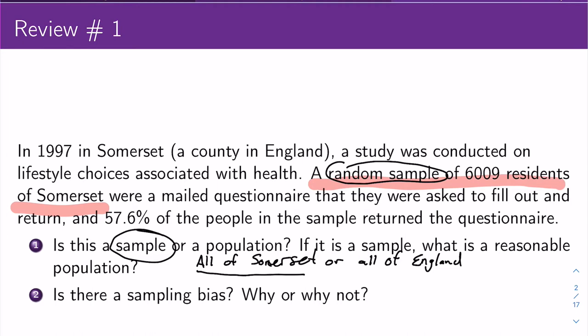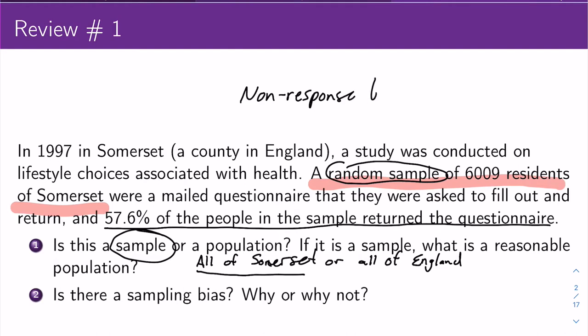But does that mean there's no bias at all? We see that only 57.6% of people in the sample returned their questionnaires, so we could have what's known as non-response bias, which could certainly be an issue. That's not the same thing as sampling bias — sampling bias comes from not having random samples. In this situation we have a random sample, so we cannot have sampling bias, but that doesn't mean we can't have bias more generally.